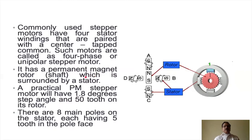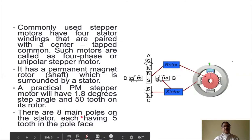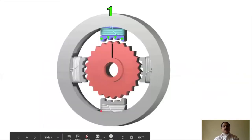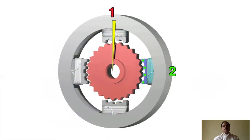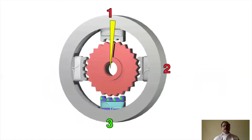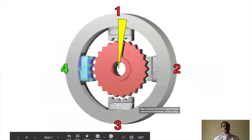The permanent magnet rotor is surrounded by a stator. Practically, the permanent magnet stepper motor has a 1.8 degree step angle and a total of 50 teeth on its rotor, with eight main poles on the stator each having five teeth. Here you can see how it rotates step by step at 1.8 degrees — from position one, then two, then three, then four — showing how the motor moves in steps.